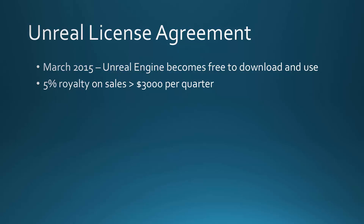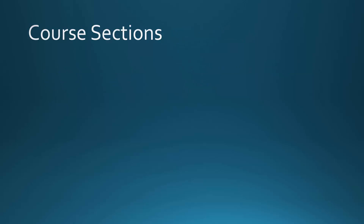Alright, so let me give you a brief outline of the course. The course is divided into nine sections. The first section, Getting Started, will help you get the engine installed and will introduce you to some basic concepts. The second section will teach you about the level editor, which is used to create the environments for your games. The third section, Actors, will teach you about the various types of entities available in Unreal to help you craft your environments and your games.